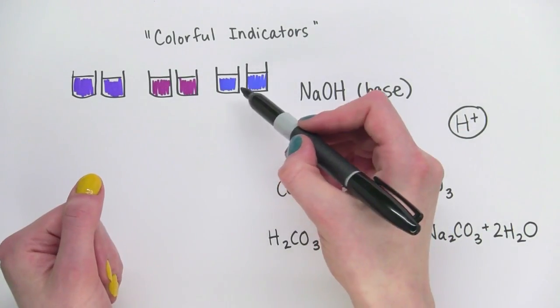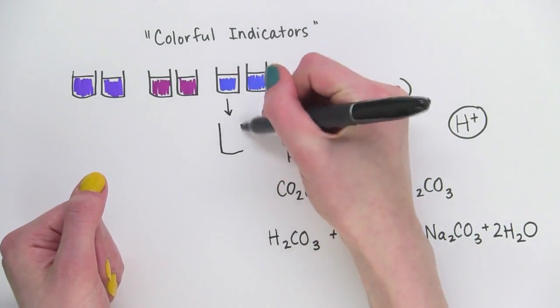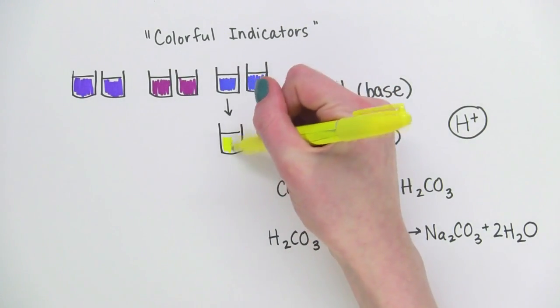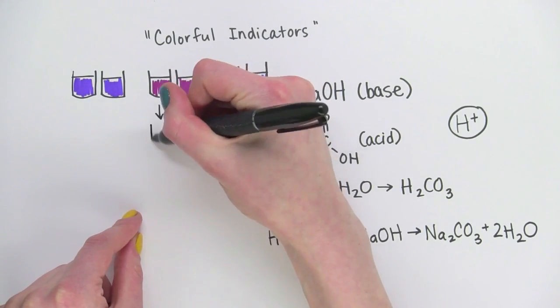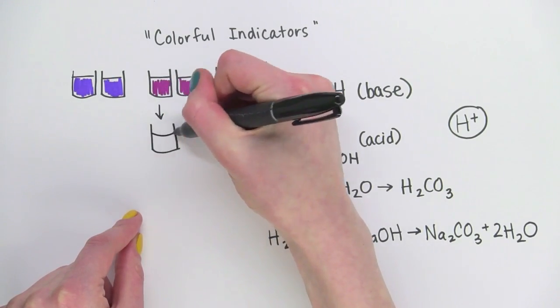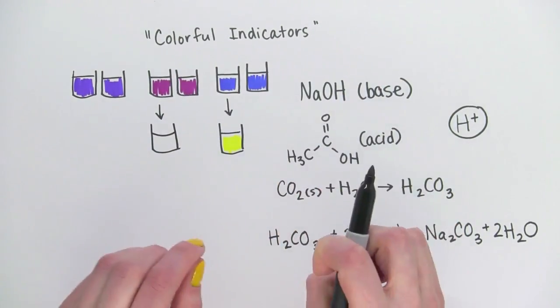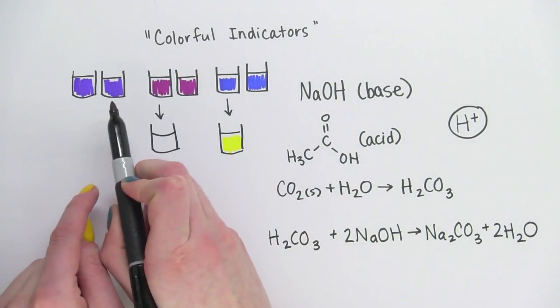So we saw our bromothymol blue turning from blue to yellow as the solution became more acidic. And we saw our phenolphthalein turn from pink to colorless as it became more acidic. Now let's watch again what happens in the final set of cylinders.